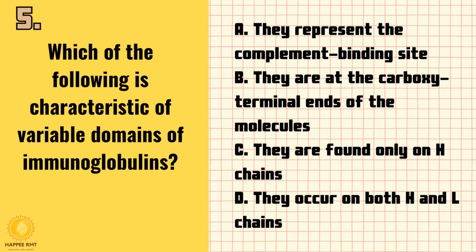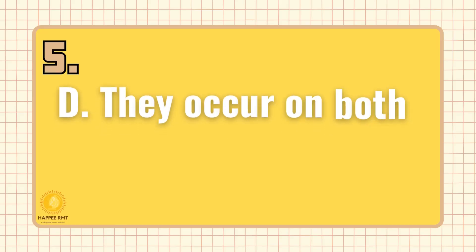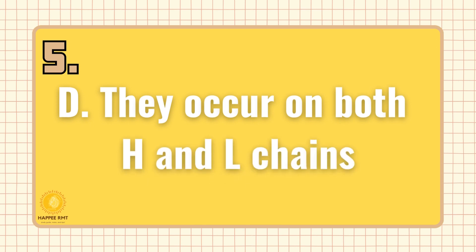Number 5. Which of the following is characteristic of variable domains of immunoglobulins? A. They represent the complement binding site. B. They are at the carboxy terminal ends of the molecules. C. They are found only on H chains. D. They occur on both H and L chains. Answer is D: They occur on both H and L chains.